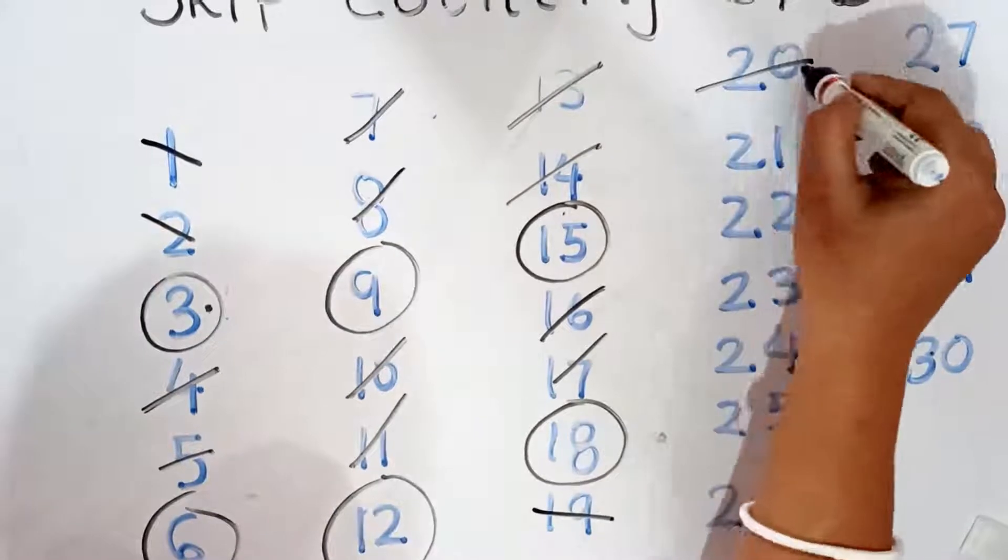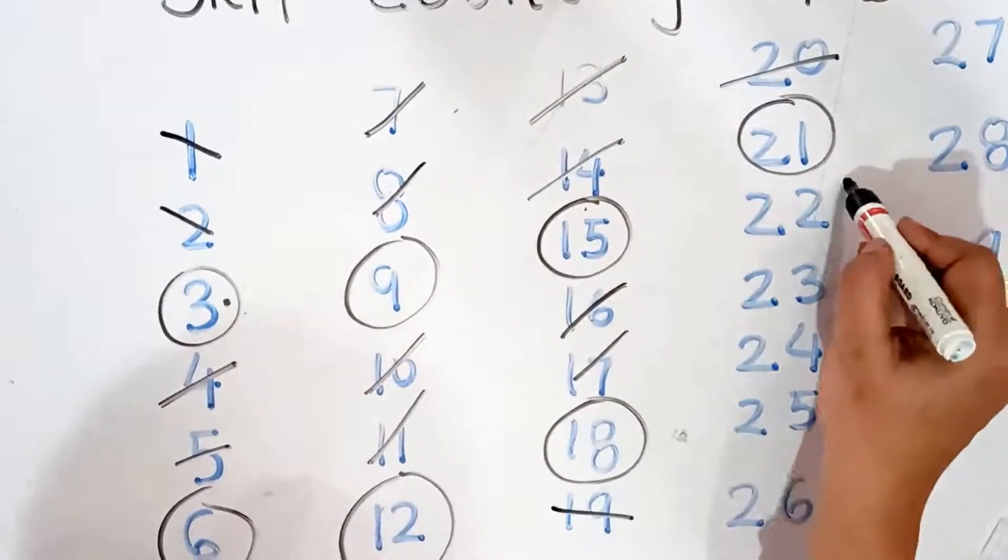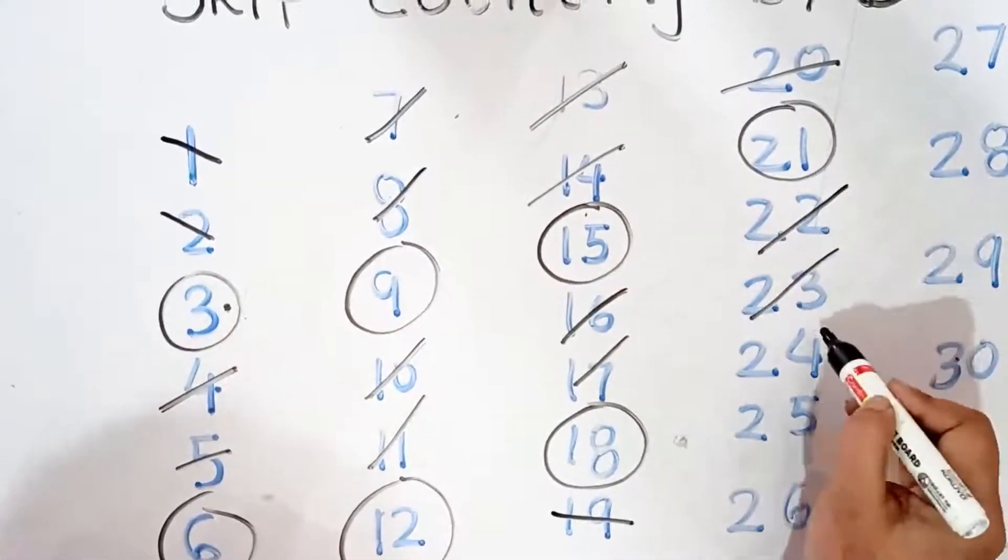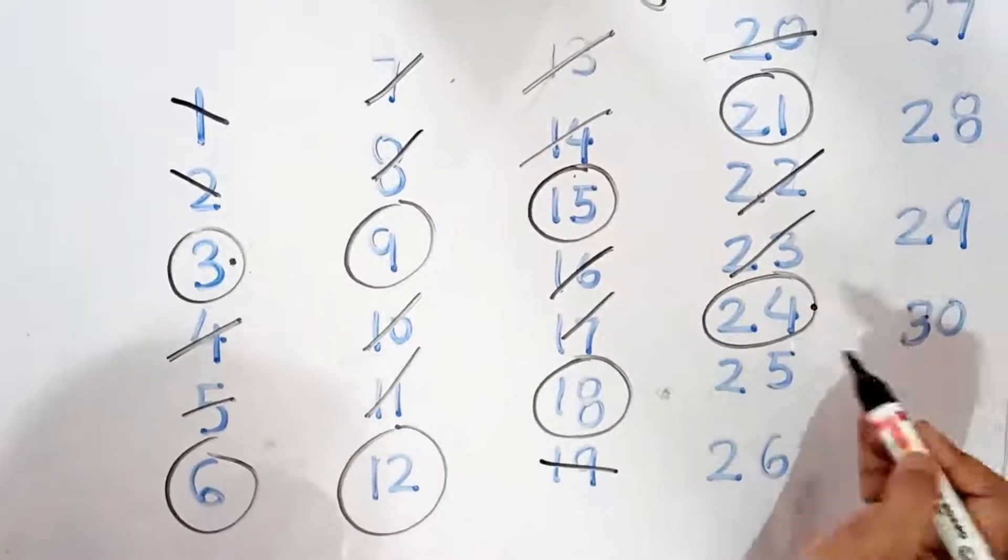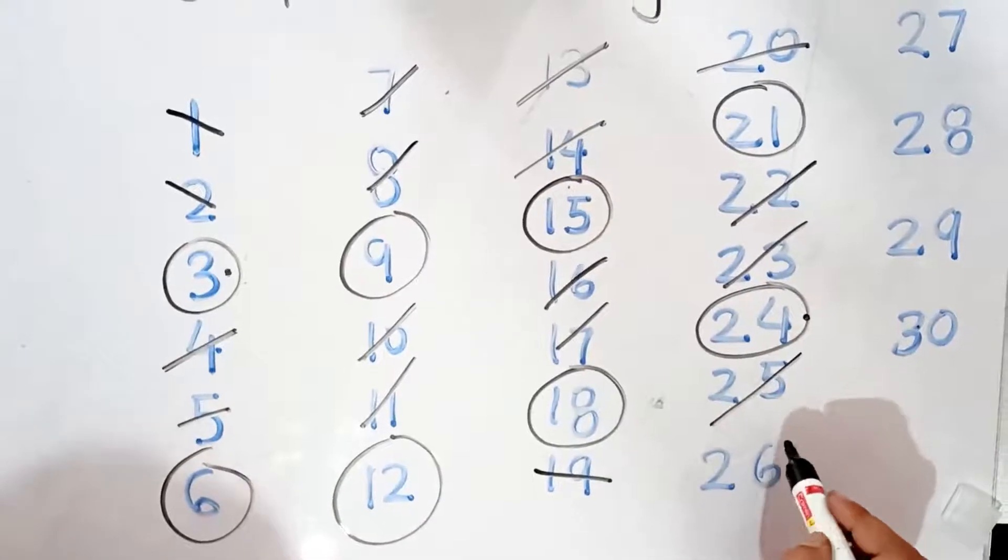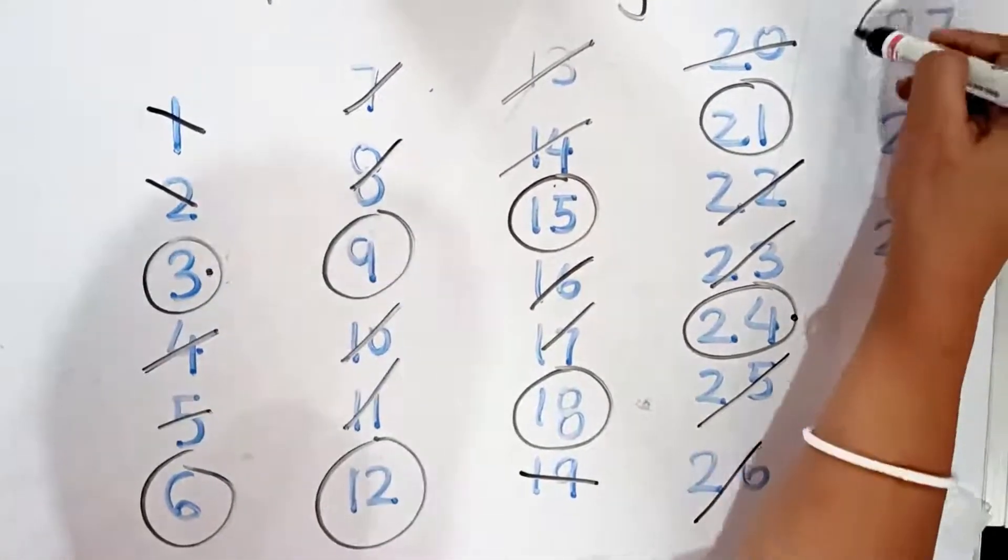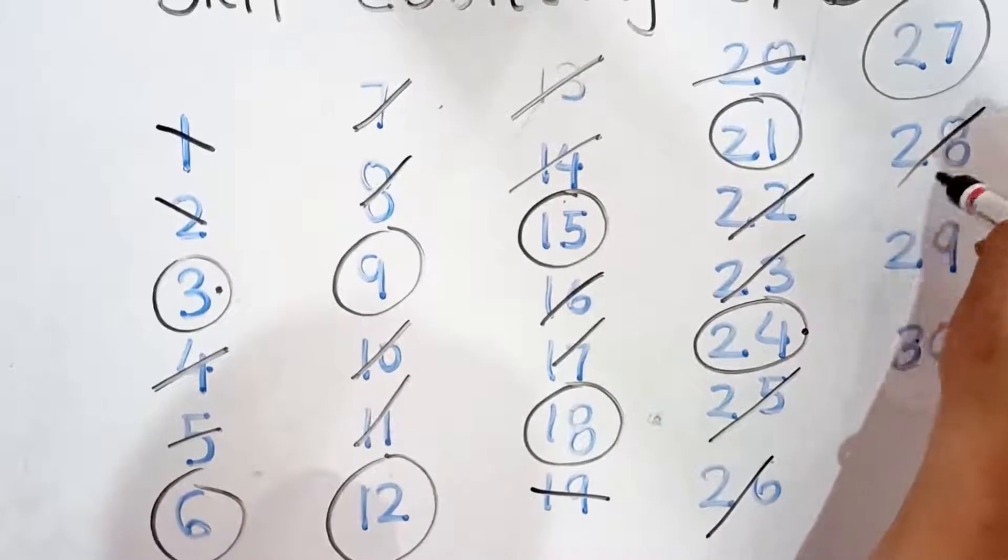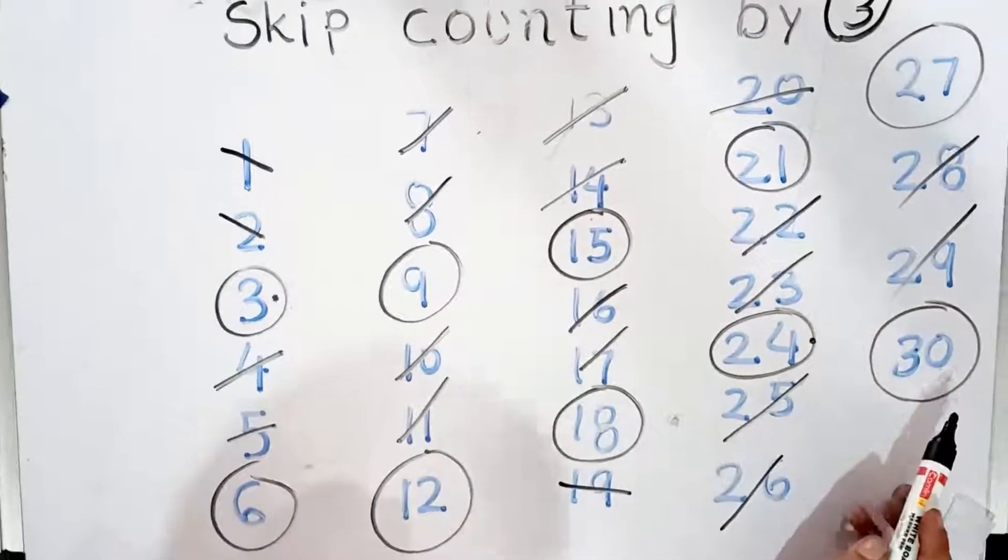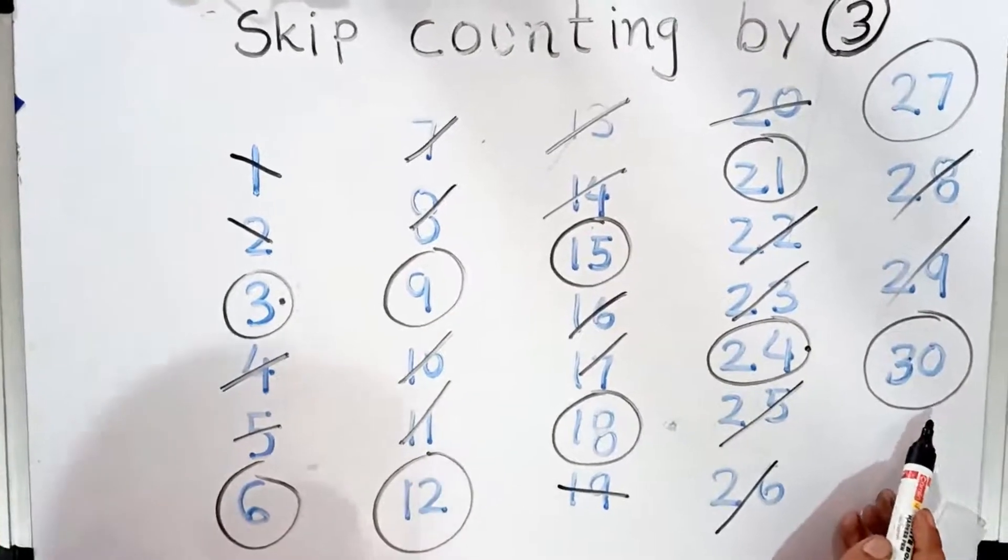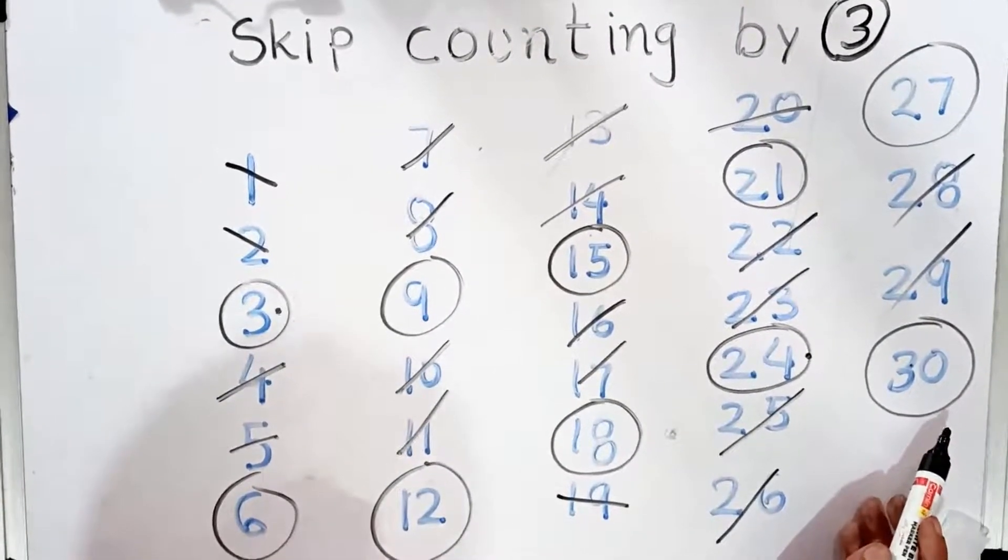Cut 22, 23. We get 24 in the skip counting by 3. Cut 25, 26. Which number is coming? 27. Cut 28, 29. Which number will come? 30. This way, you can learn skip counting by 3.